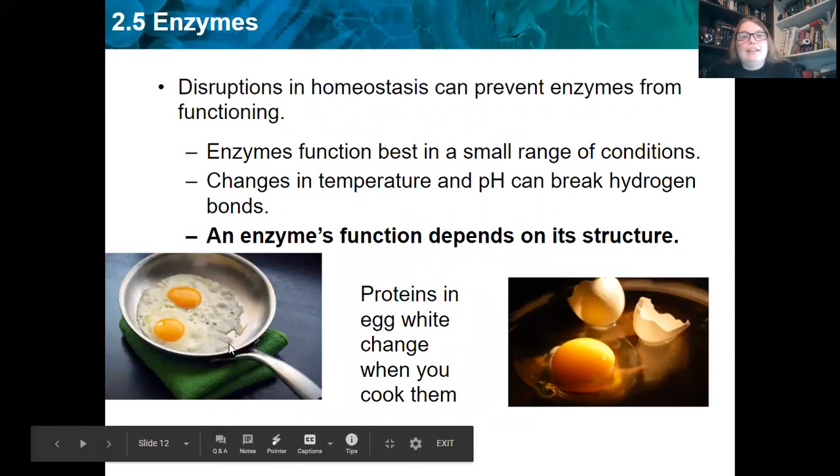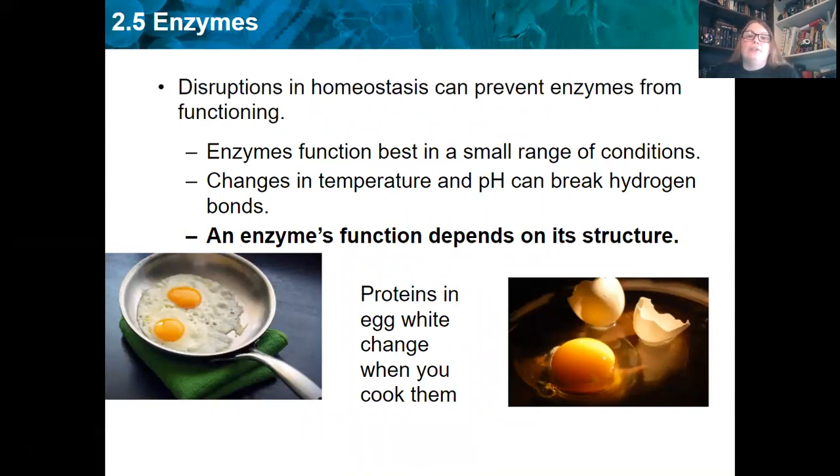So enzymes, like us, work in a very small range of conditions. Disruptions in homeostasis can prevent your enzymes from functioning. That is why you don't want your body to get too hot. That's why a lot of the things our body does happen is we have to prevent our enzymes from getting denatured, and homeostasis from being disrupted. So there are some things that are going to affect our enzymes. Change in temperature, so heat, sometimes too cold, but usually if it's too hot, and then pH, both of those break hydrogen bonds.